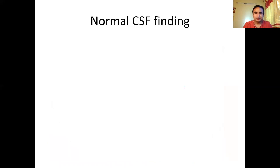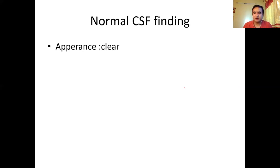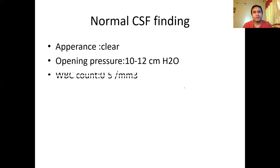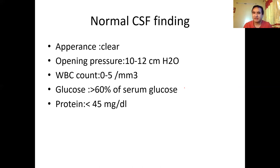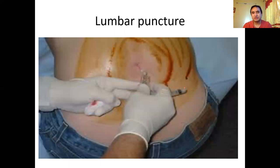The basic investigation for meningitis is lumbar puncture. When planning a lumbar puncture, you must always rule out raised ICP and any space-occupying lesion. On CSF analysis, normal CSF appearance is clear, opening pressure is 100 to 120 mmH₂O, WBC count up to 5 is normal with all lymphocytes, glucose is usually more than 60% of serum glucose, and protein is between 20 to 40 mg/dL. We have already discussed the lumbar puncture technique in detail in our last lecture — you can refer to that video.